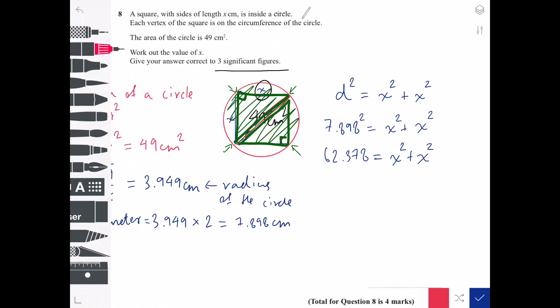If we want to know what only x² is, we have to divide 62.378 by 2. So 62.378 divided by 2 equals x², which will be 31.189.